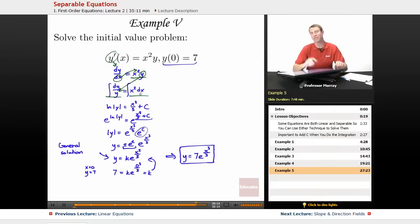So I've got all x's on one side, all y's on the other, and I can integrate both sides. Integral of dy over y is natural log of y. The integral of x squared is x cubed over 3 plus c. Got to add that c when we integrate.